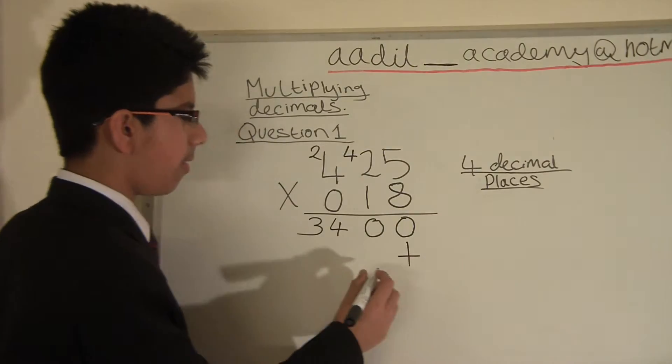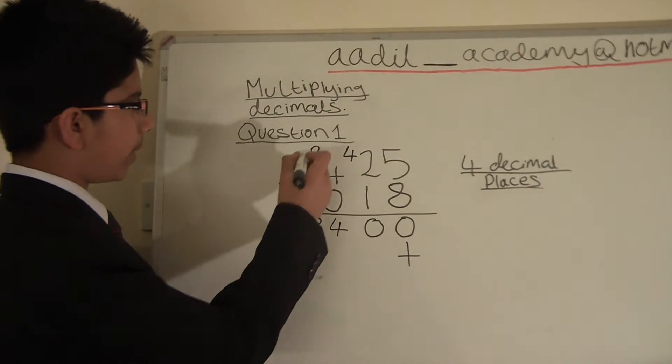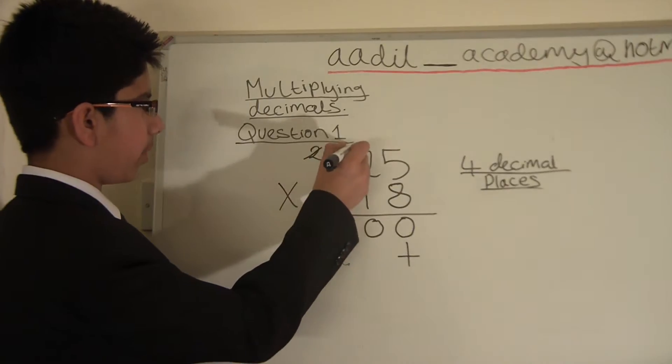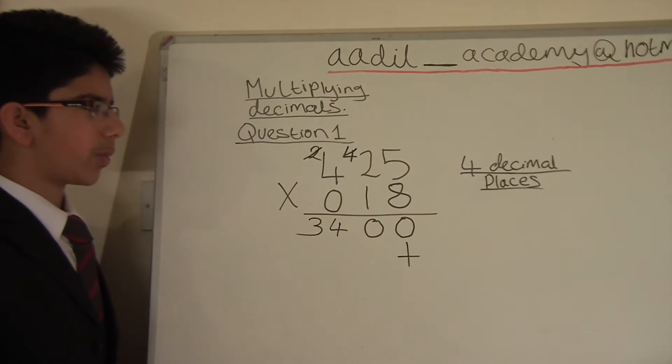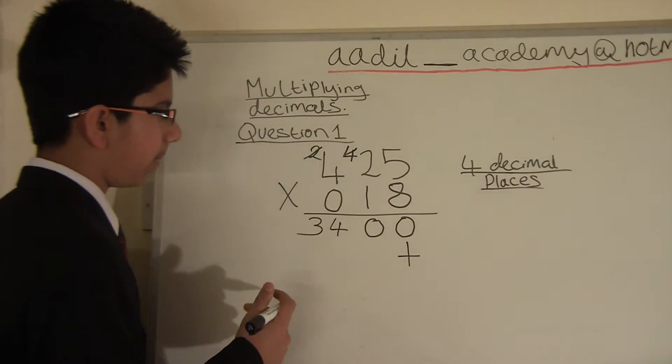The plus stands for 0. We just crossed out the numbers we carried on so we don't get confused if we have to carry on in the next sum.